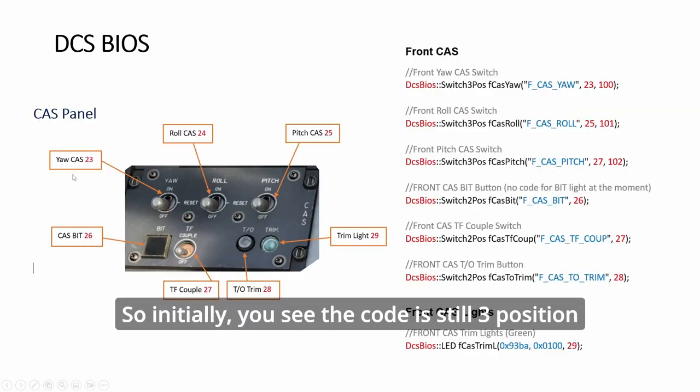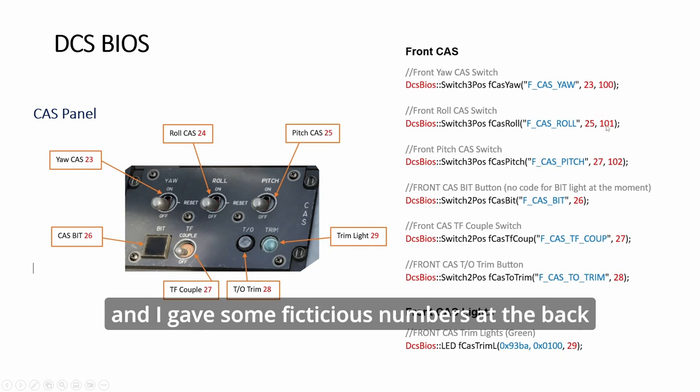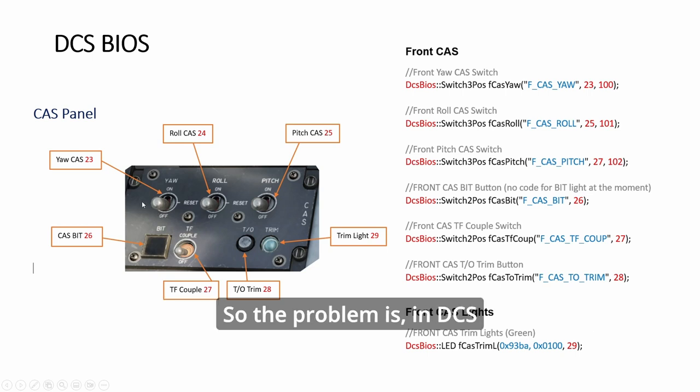So initially, you see the code is still three position and I gave some fictitious numbers at the back. So the problem is in DCS, the way it works is off, reset, on.